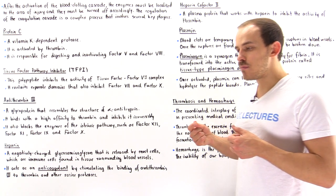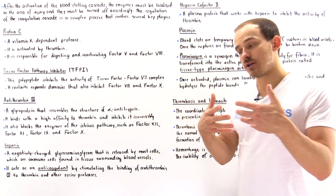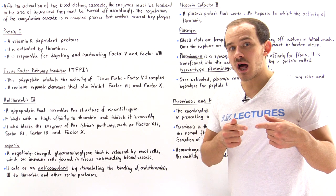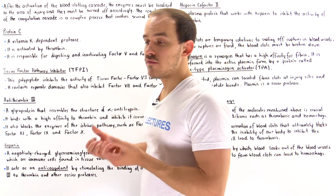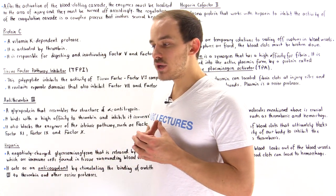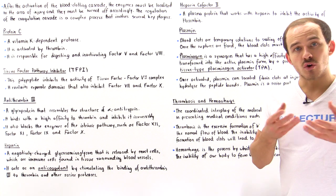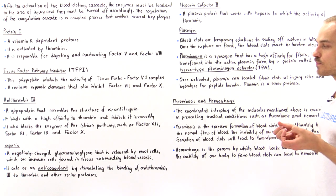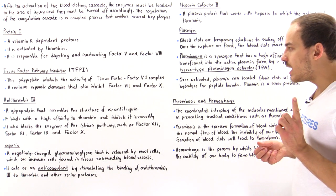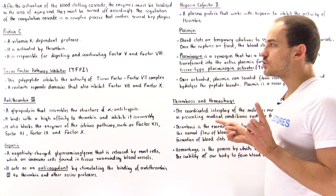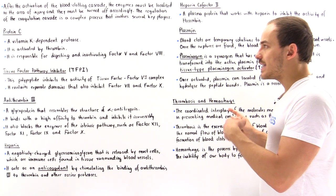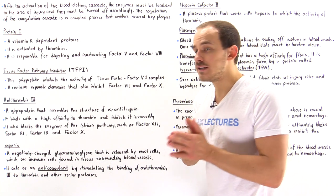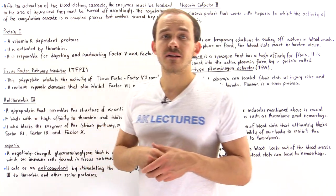An embolism is the process by which blood clots aggregate abnormally and block the flow of blood to some tissue or organ of our body, leading to many problems. For instance, if we have an embolism in the coronary artery, that can lead to a heart attack. There is a very fine line between thrombosis and hemorrhage, and to prevent either one from damaging our organs and tissues, our body must precisely and effectively regulate the coagulation cascade.